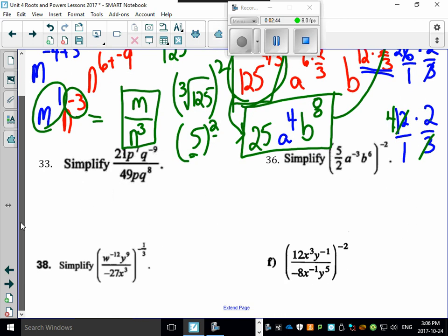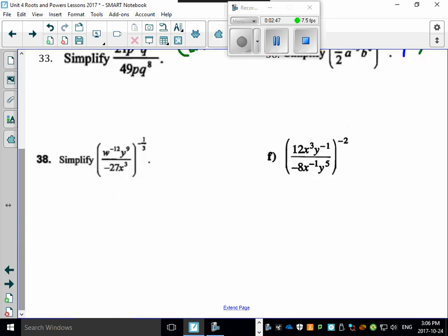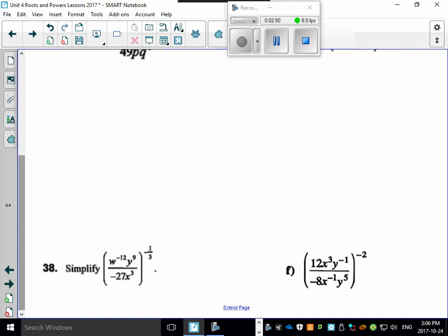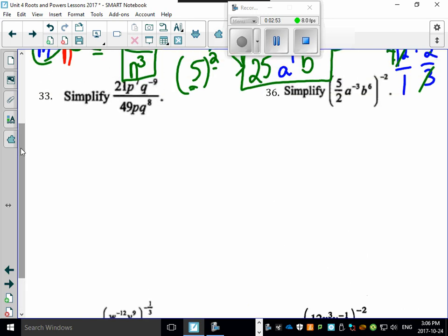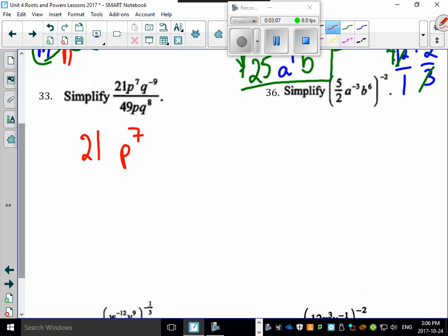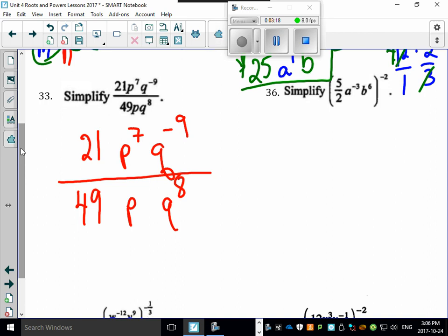Let's go to 33 here. I'm going to move some of this stuff around and give myself a little bit more room to play around with. When you get a question like 33, rewrite it so it looks pretty. There's 21, give yourself some space. Look - 49 goes here, P goes here, Q to the 8 goes here. If you line this up like this, you actually have three separate questions that you can do.